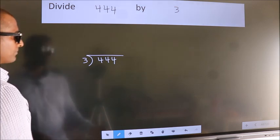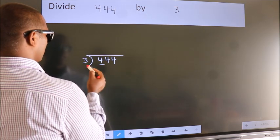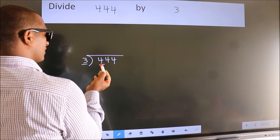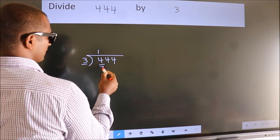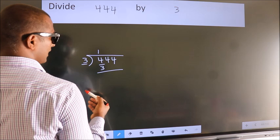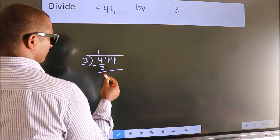Next. Here we have 4, here 3. A number close to 4 in the 3 table is 3 1s 3. Now, we should subtract. We get 1.